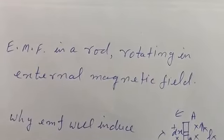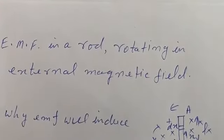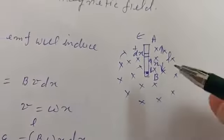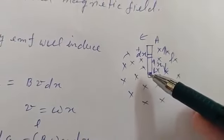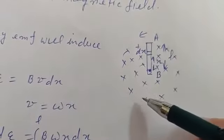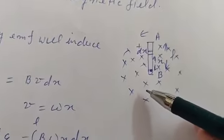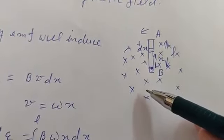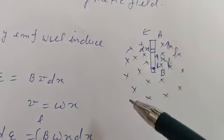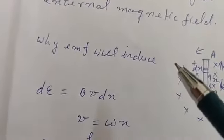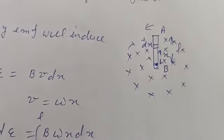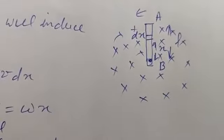Now we will take the next case: EMF in a rod rotating in an external magnetic field. There is an external magnetic field. This is a rod; this end can rotate on this end — this is the axis of rotation — and it can rotate in this magnetic field. The magnetic field is perpendicular to the plane of the paper and entering into the plane of the paper. This rod is rotating with a constant angular velocity omega. The first question is: why will EMF be induced in this rod, and if there is an induced EMF, which terminal will be positive and which one will be negative?